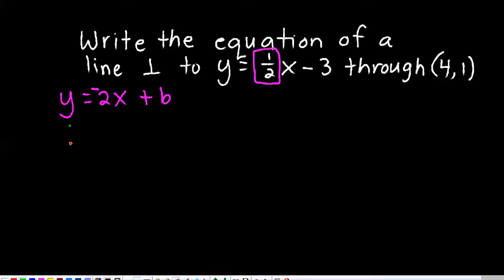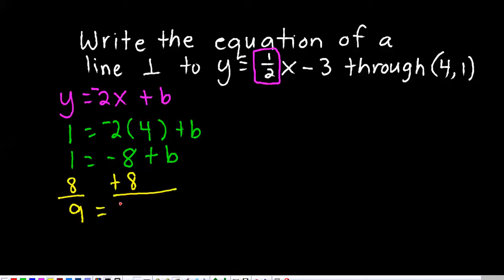Okay, and that's going to go right here, and then you're going to, instead of putting an x, substitute the 4, and then solve for b. So, it's going to be 1 equals negative 8 plus b. Or, I'm going to go ahead and add 8 to both sides to figure out what b is. 9 equals b.